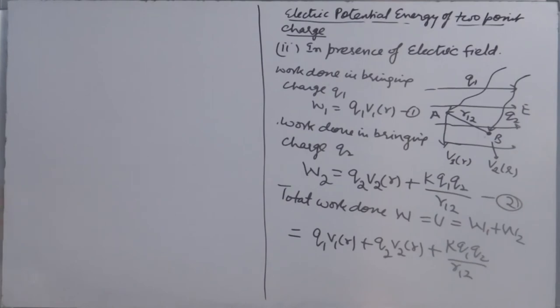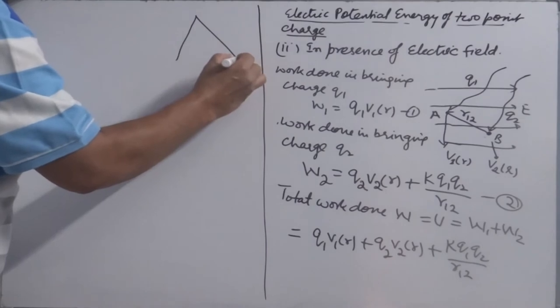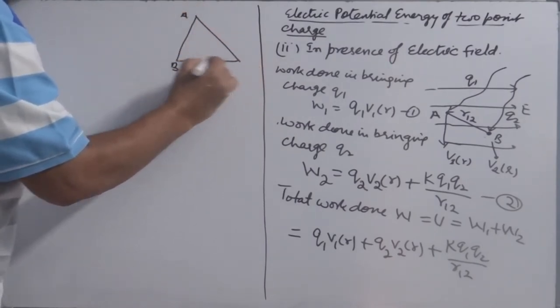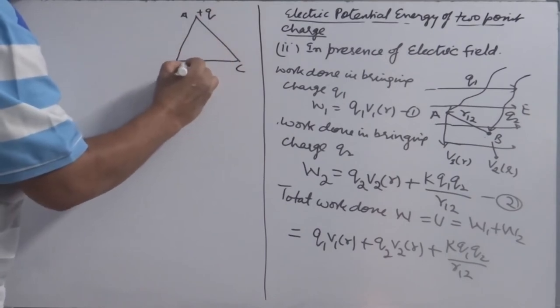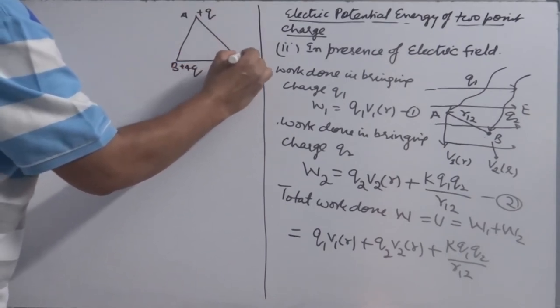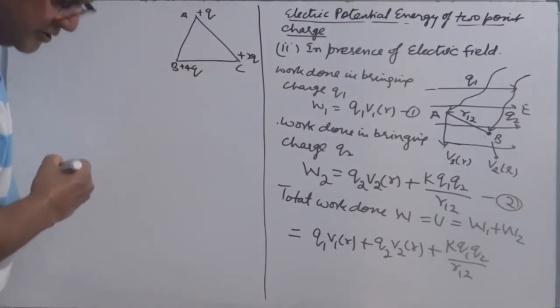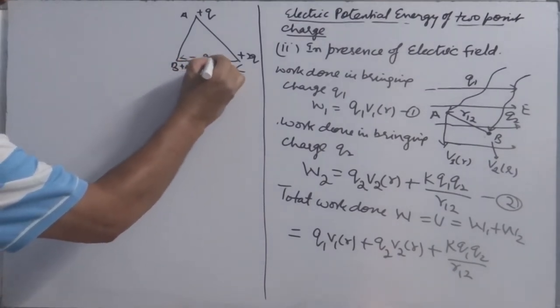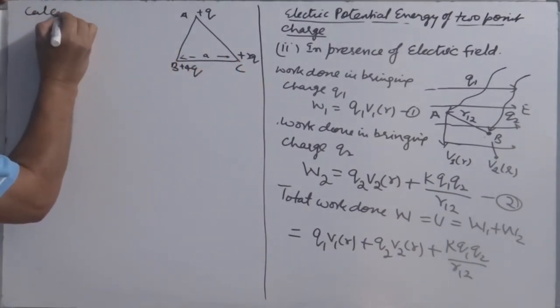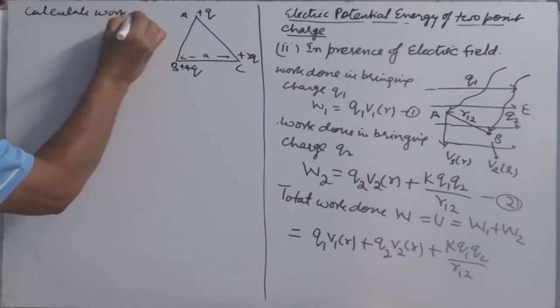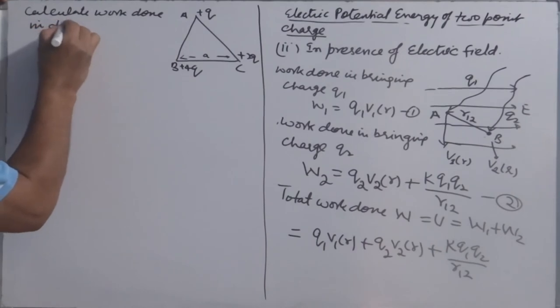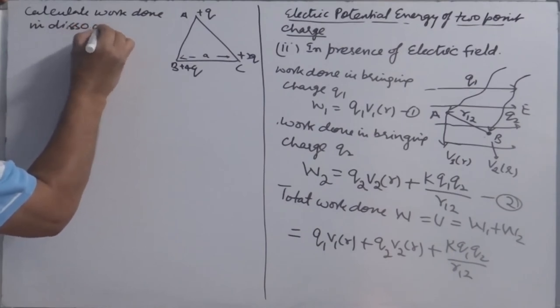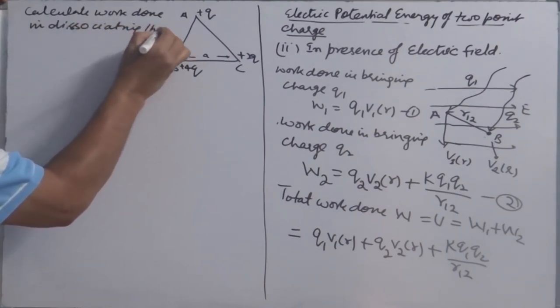Let's do one question. Calculate work done in dissociating system. There is a system equilateral triangle. Three charges are placed here: plus Q, plus 4Q, and plus 2Q. We want to dissociate this charge. Equilateral triangle of side A. Calculate work done in dissociating this system.